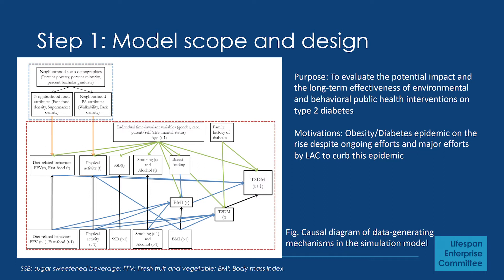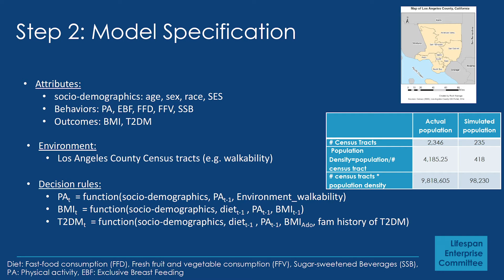First, we talked to researchers to come up with a causal diagram — a very complex one, as you can see on the left side here — that involves a lot of behaviors, environmental variables, and outcomes. We put all of that into a model and defined different attributes: demographics like age, sex, race, and socioeconomic status; different behaviors like physical activity and fresh vegetable consumption; and the outcomes of interest — body mass index and type 2 diabetes.